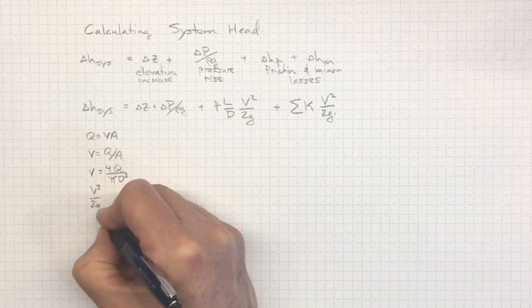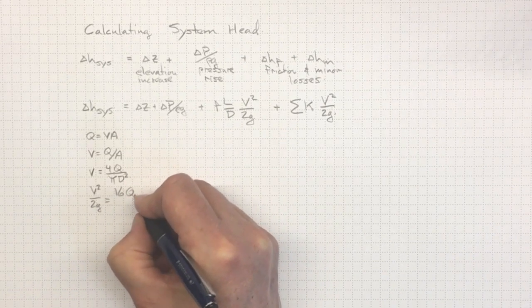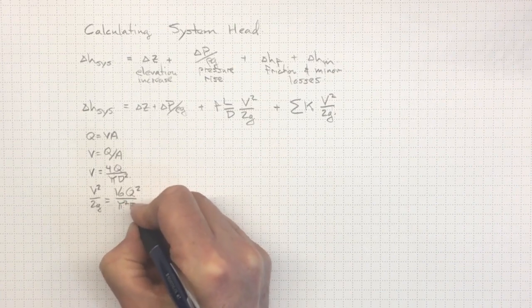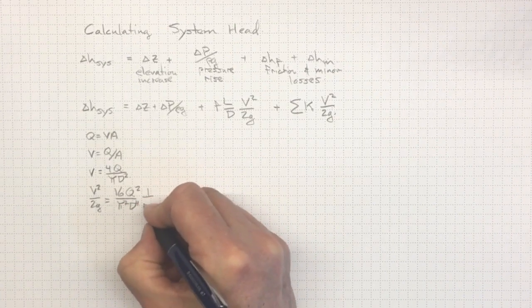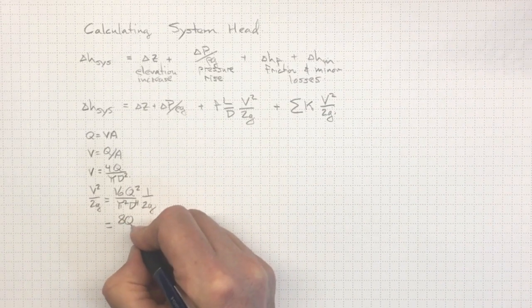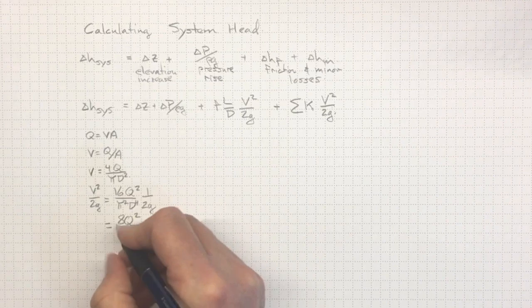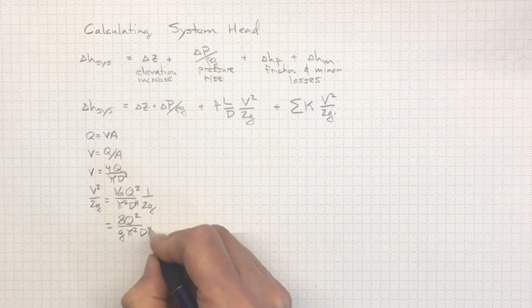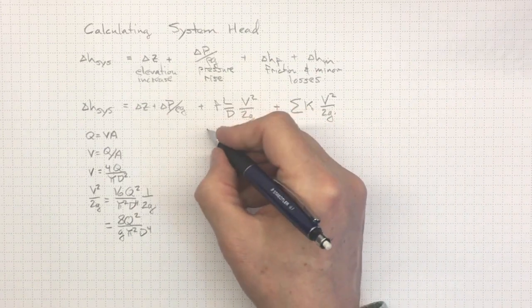So that V squared over 2G will be equal to 16 Q squared over pi squared D to the fourth times 1 over 2G, or 8 times Q squared over G times pi squared times D to the fourth.